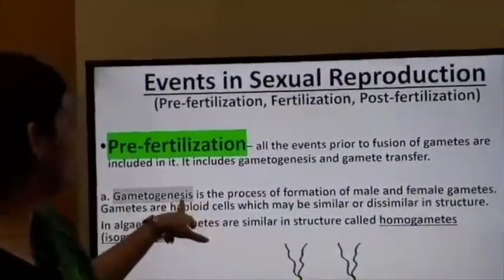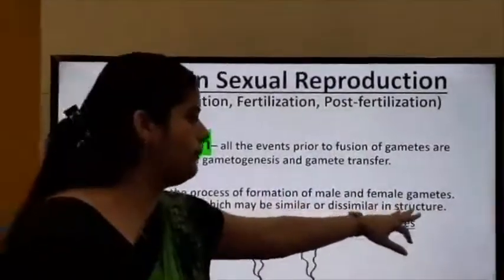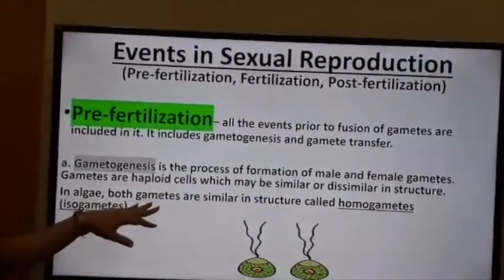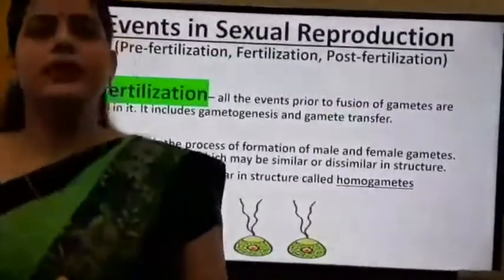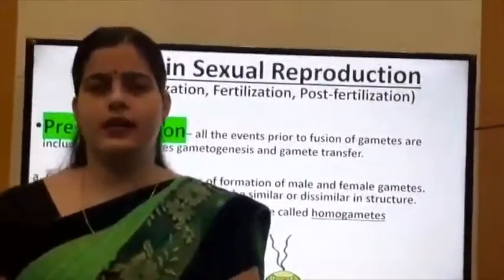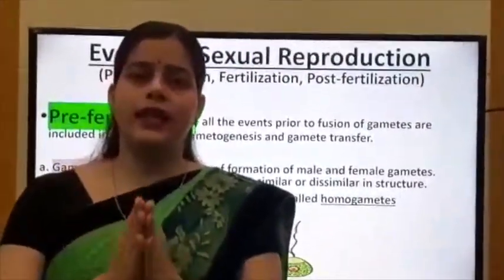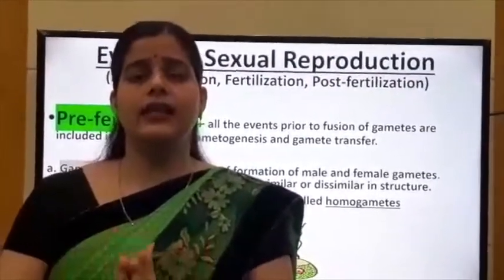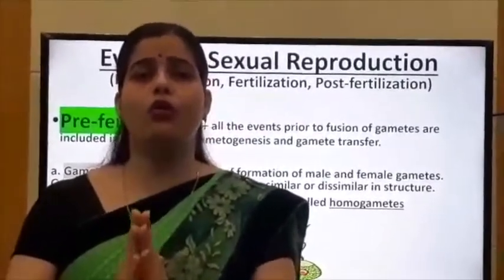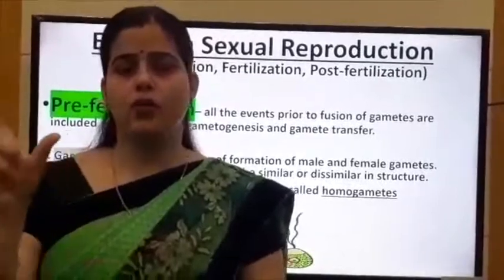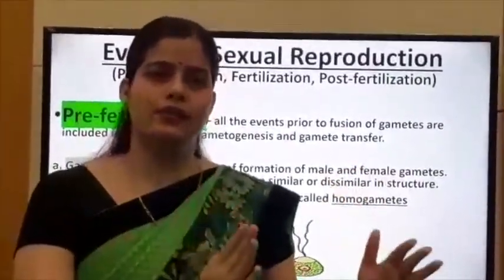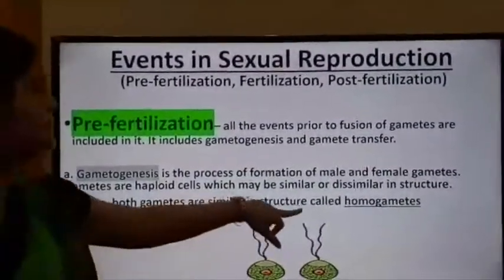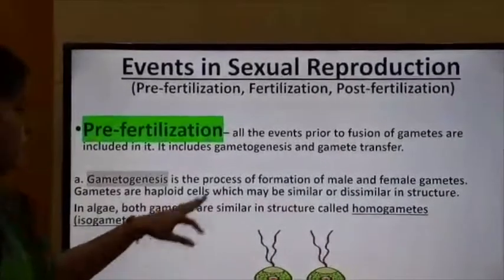Gametogenesis is the process of formation of male and female gametes. Gametes are haploid cells which may be similar or dissimilar in structure. If gametes are morphologically similar, they are known as homogametes or isogametes, as seen in algae where both gametes are similar in structure.